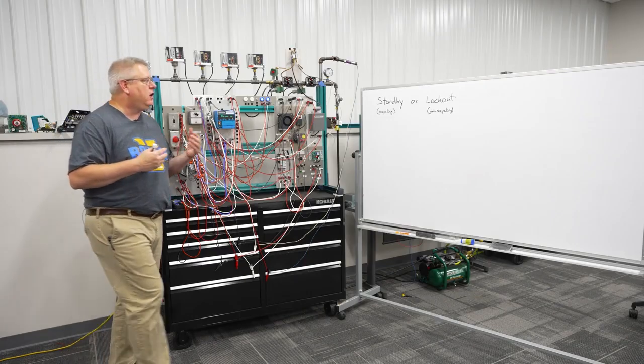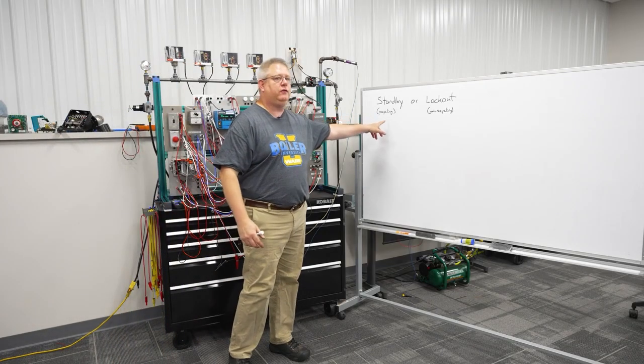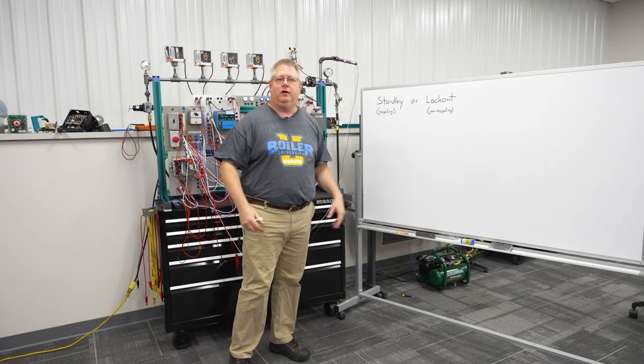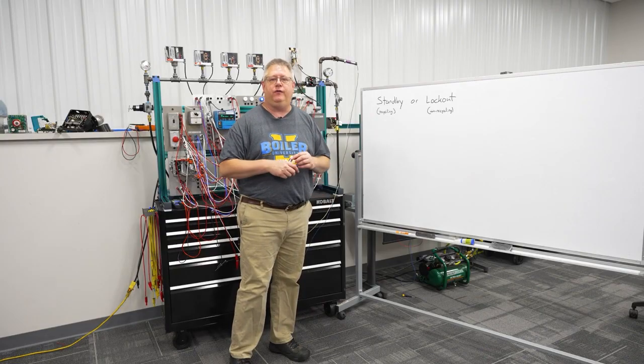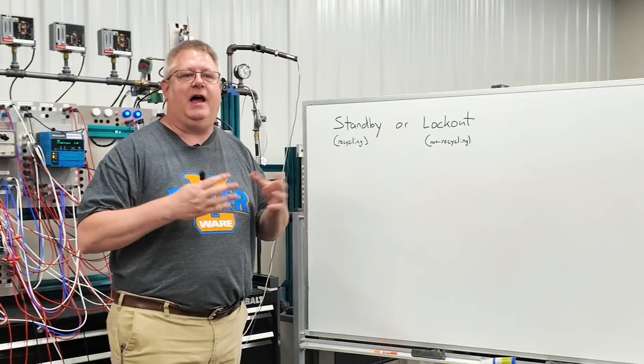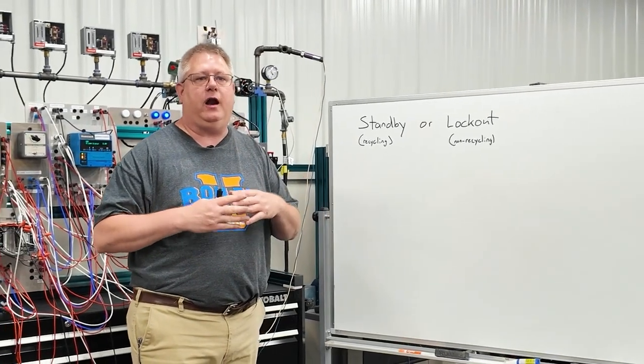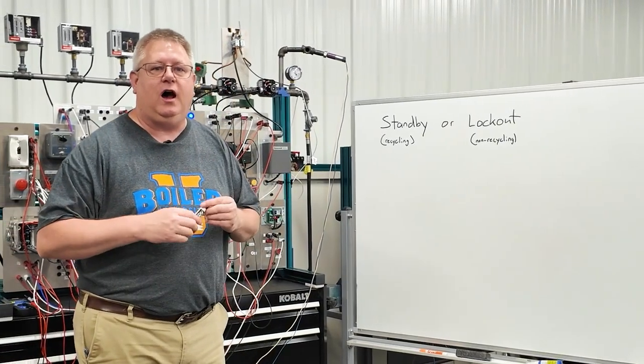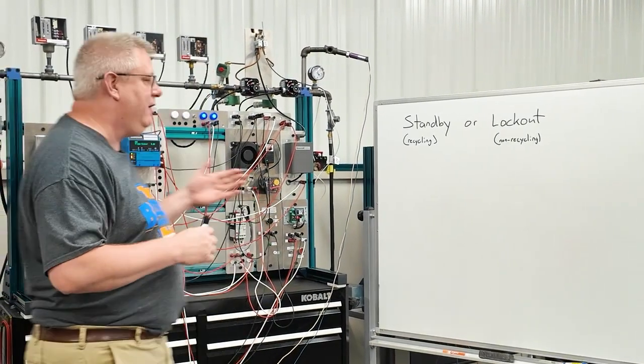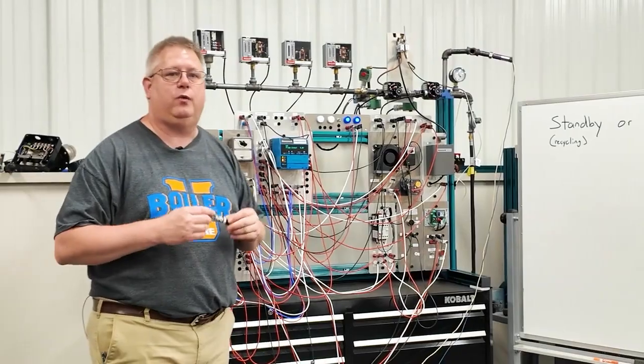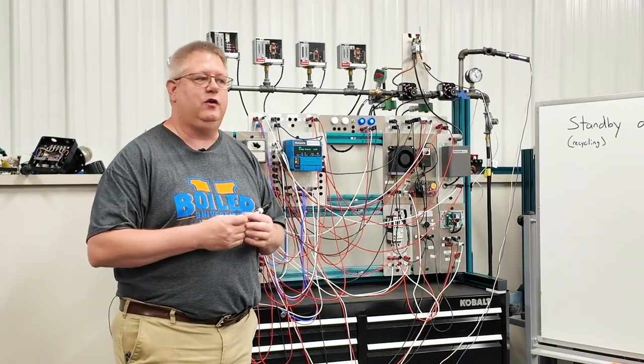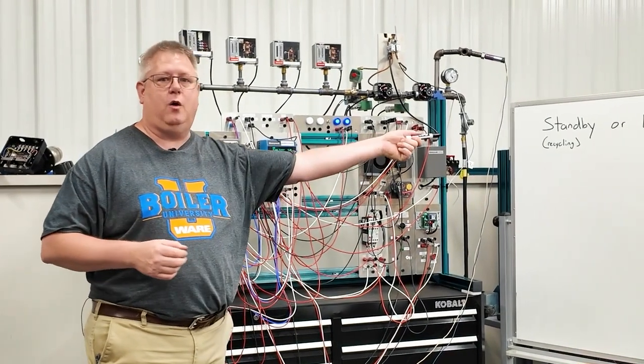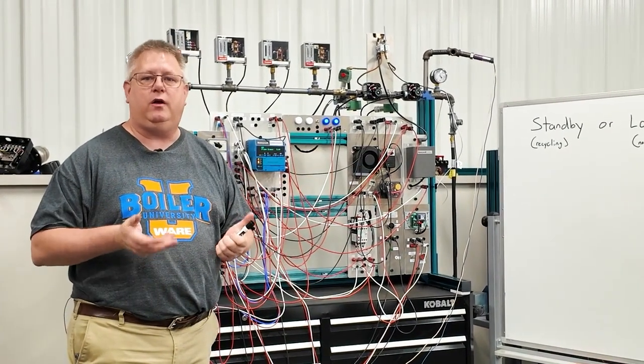Because there are essentially two limit circuits that constitute 90% of our boiler failures. We're out on a gas pressure switch, or we're out on an operating pressure switch. A flame safeguard control will identify which of those limits we're in by going into a standby mode or going into a lockout mode.